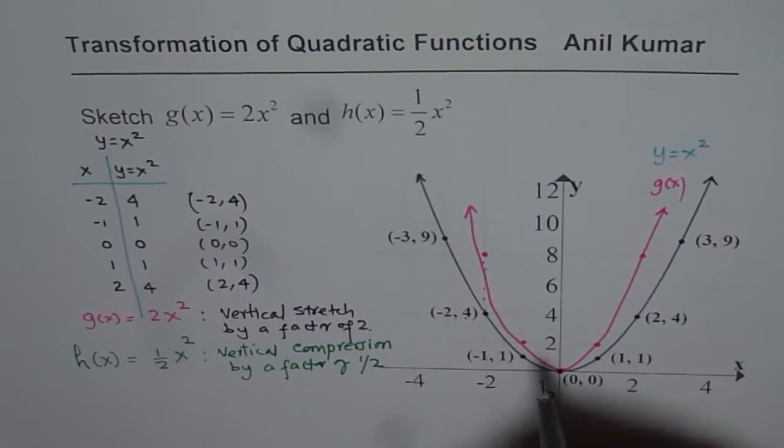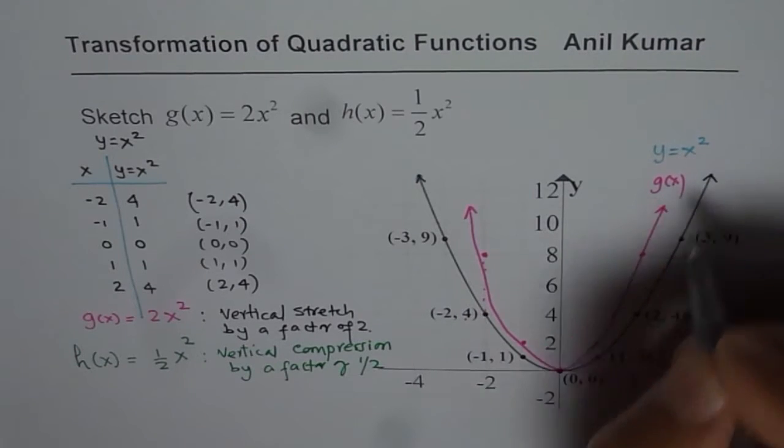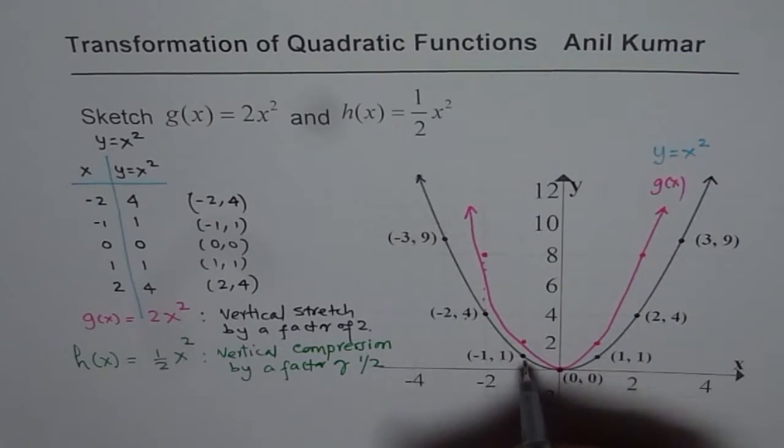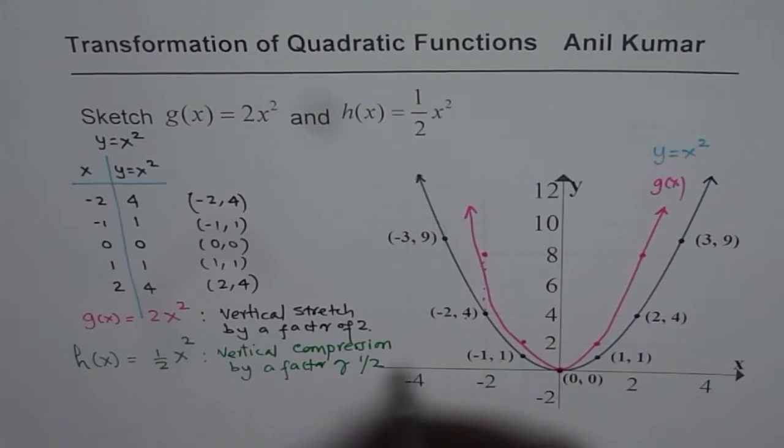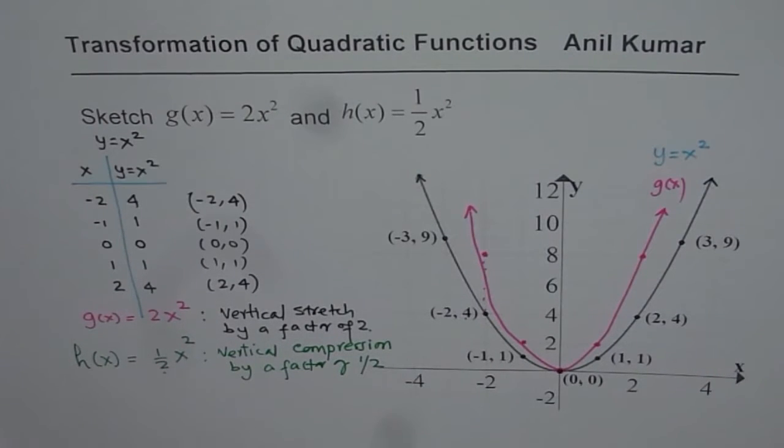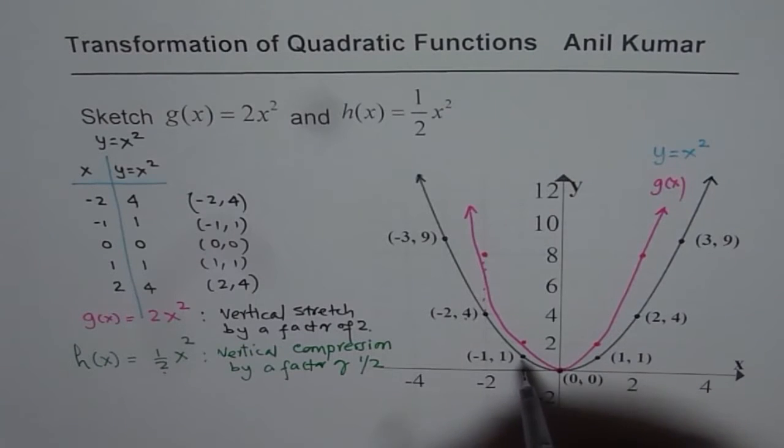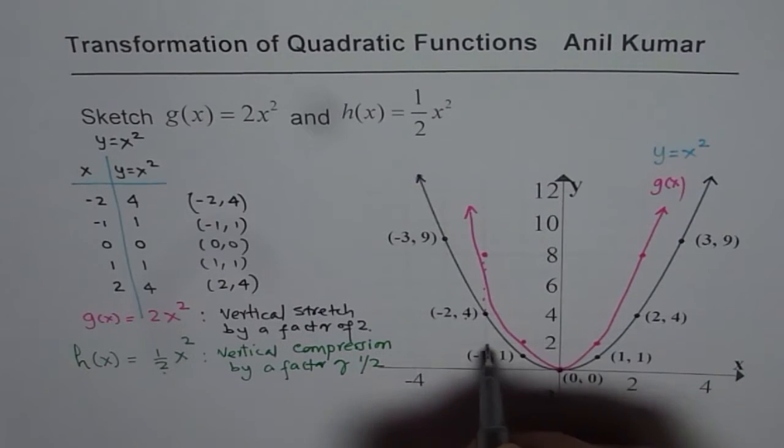So compression really means that we will start with the original graph. The y values now are multiplied by half instead of 2. Since we have half as the coefficient of x square. So if you multiply 4 by half you get the number 2.